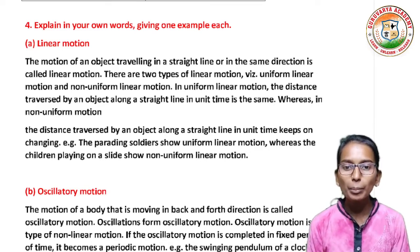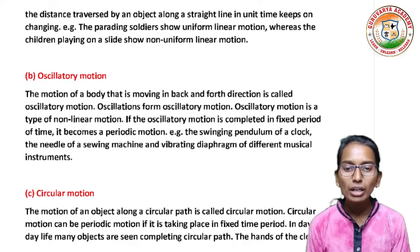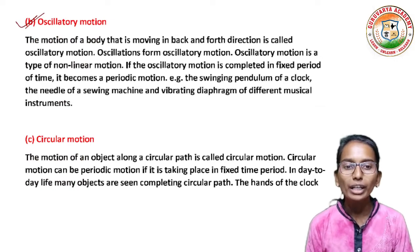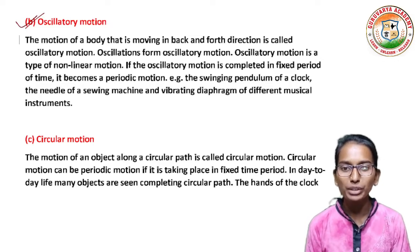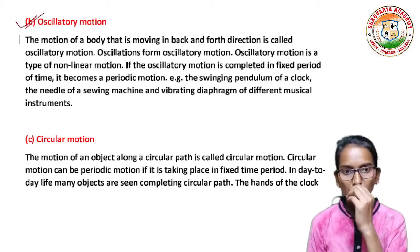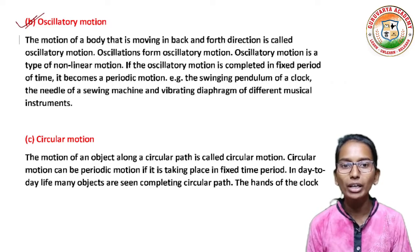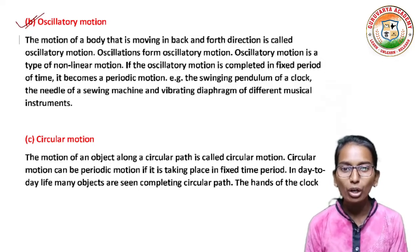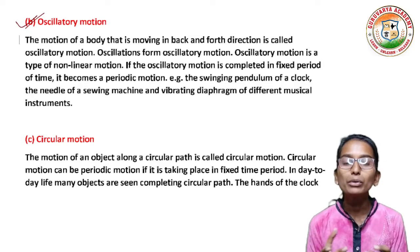Whereas, the children playing on a slide show non-uniform linear motion. The motion of a body moving in a back and forth direction is called oscillatory motion. Oscillatory motion is a type of non-linear motion. If oscillatory motion is completed in a fixed period of time, it becomes periodic motion. For example, the swinging pendulum of a clock, the needle of a sewing machine, and the vibrating diaphragm of musical instruments.